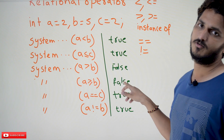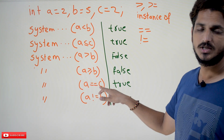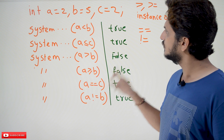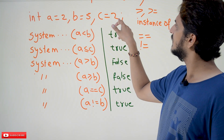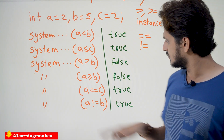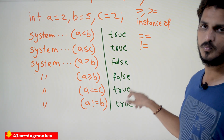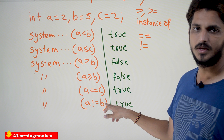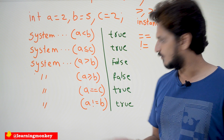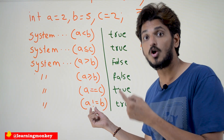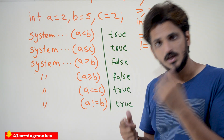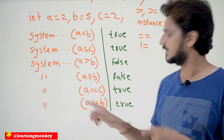a greater than or equal to b is false. Similarly, a equal to c — it checks the equality condition between two operands. a is 2, c is 2, so 2 equal to 2 is true. Similarly, a not equal to b — 2 not equal to 5. Yes, the condition is true, so it is going to display true.